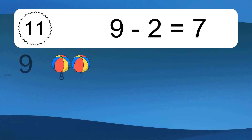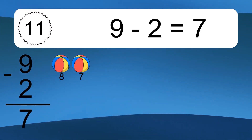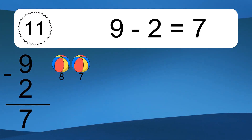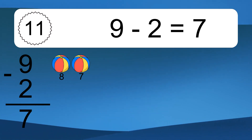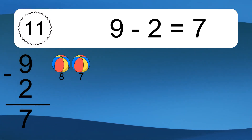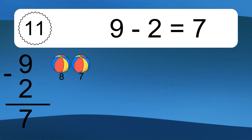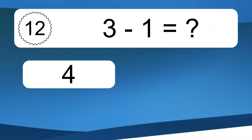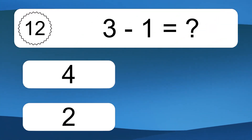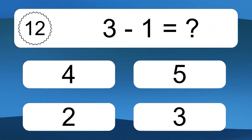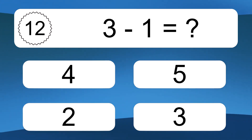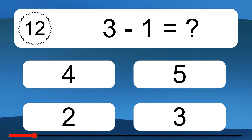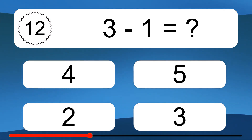9 minus 2 equals what? 9 minus 2 equals 7. Let's count it. 8, 7. 3 minus 1 equals what?